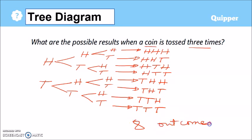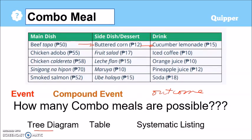So how many outcomes do we have? We have 1, 2, 3, 4, 5, 6, 7, 8 — we have eight outcomes. A tree diagram is easy to use when we only have few choices; this is not recommended though if we have a lot of choices.